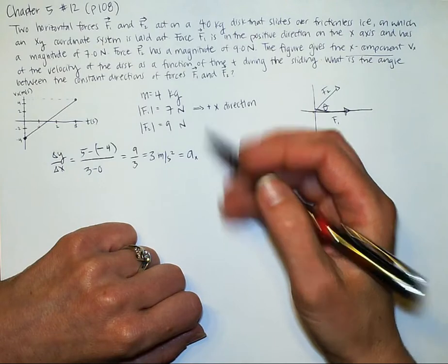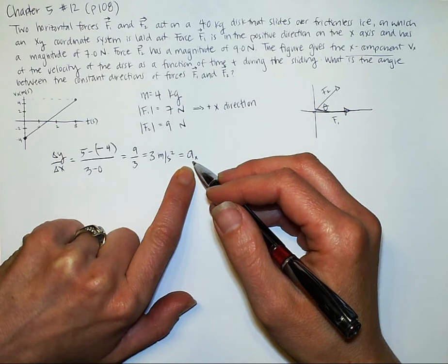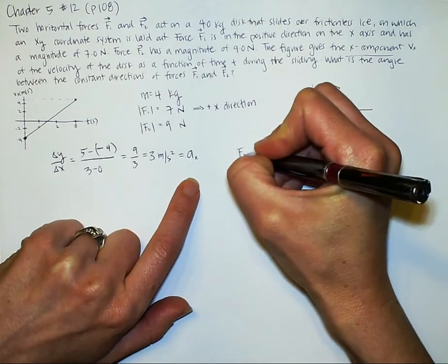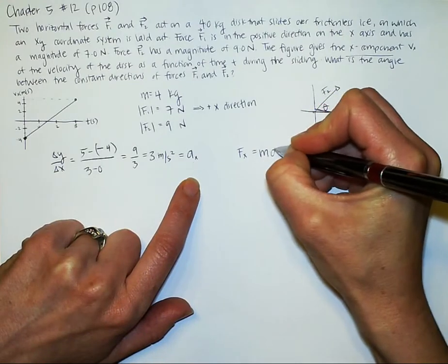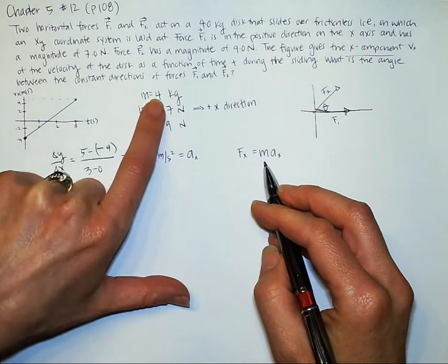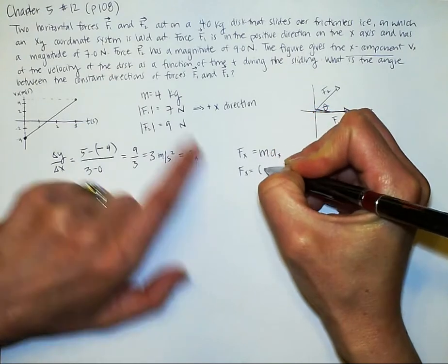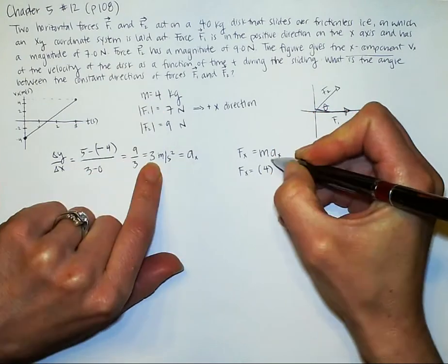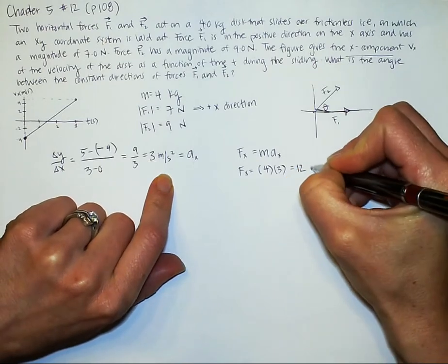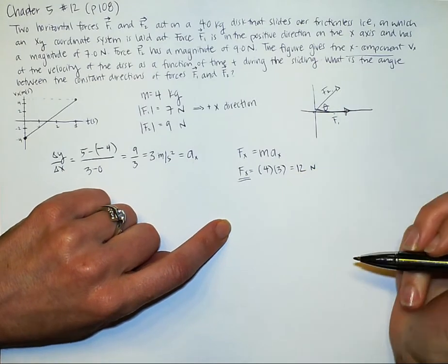Since forces and accelerations are vector quantities, we can use this to figure out the entire force in the x direction. So force in the x direction equals mass times acceleration in the x direction. Mass is a scalar quantity, so that can be used in whatever direction we please. So force in the x is going to be 4 times 3, which equals 12 newtons. That's my total force in the x direction from force 1 and force 2.